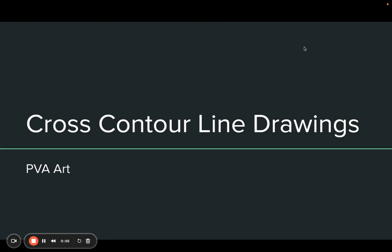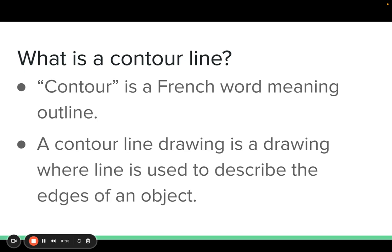An important concept to understand in art is the idea of contour line drawing and cross contour line drawing. Contour is a French word meaning outline or shape. A contour line drawing is a drawing where line is used to describe the edges of an object, including outside edges and edges we see inside an object.